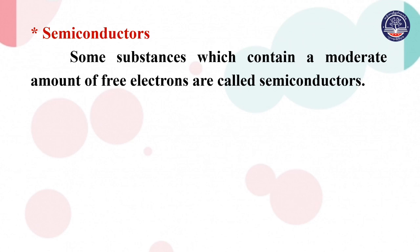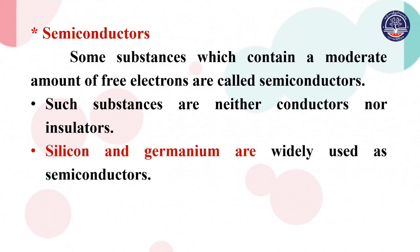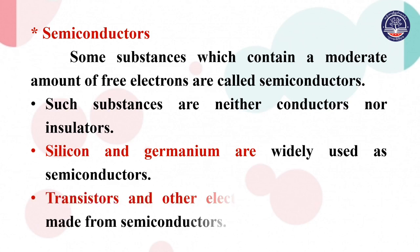Silicon is a widely used semiconductor. Transistors and other electronic components are made from semiconductors. Semiconductors are used to make transistors and various electronic devices.